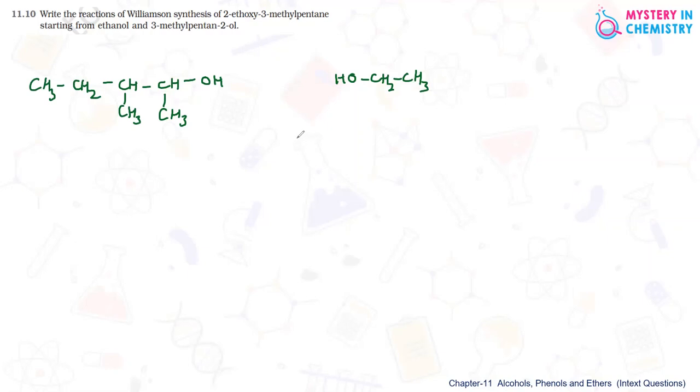For this alkyl halide should be primary having the least steric hindrance hence an alkyl halide is obtained from ethanol. So, we have to take the alkyl halide from here this should be converted to alkyl halide. So, by reaction with HBr we can get the Br-CH2-CH3. The reason is we don't want steric hindrance and SN2 mechanism should be easy.